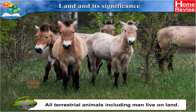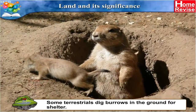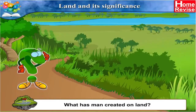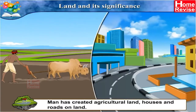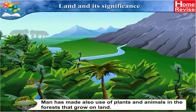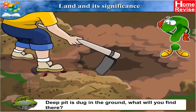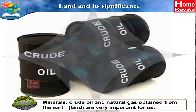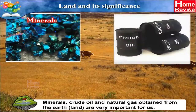All terrestrial animals, including man, live on land. Some terrestrials dig burrows in the ground for shelter, using land to fulfil their needs. Man has created agricultural land, houses and roads on land, and has also made use of plants and animals in the forests. If a deep pit is dug in the ground, water will come out of it. Minerals, crude oil and natural gas are obtained from the earth, and they are very important for us. Land is an important resource.